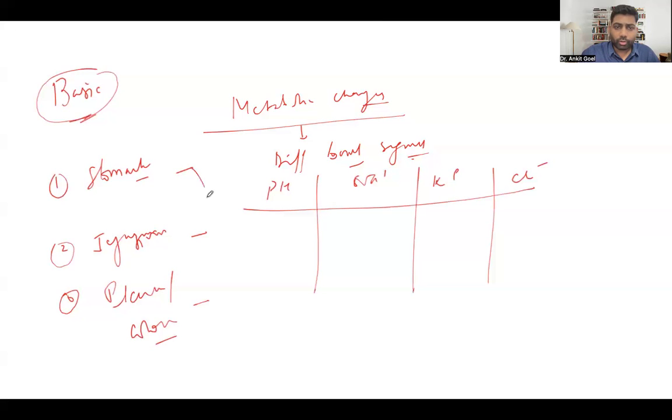So write the stomach here number one, jejunum here number two, ileum and colon number three. Now coming to the rule, the basic rule is whichever segment you pick up, only one component will be elevated in that segment. The rest of the component will be decreased. So if we talk about the stomach, if one of the component has to increase, then that is the pH and rest all of the components will be decreased.